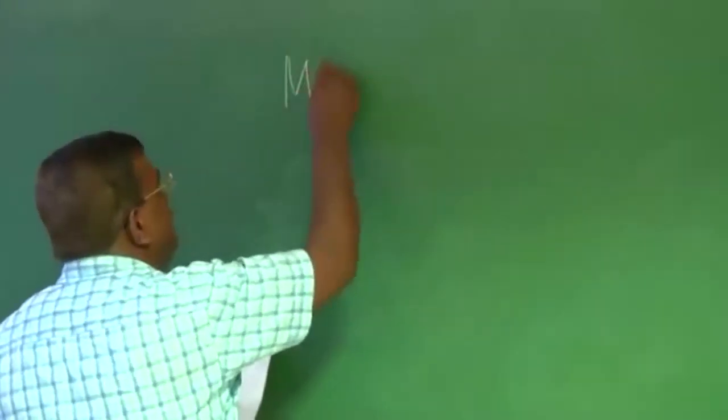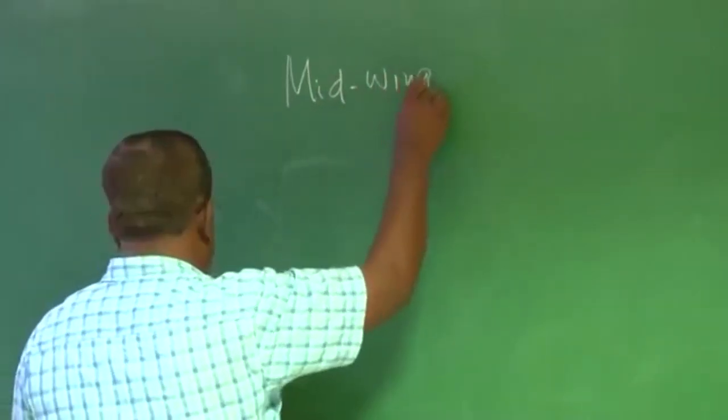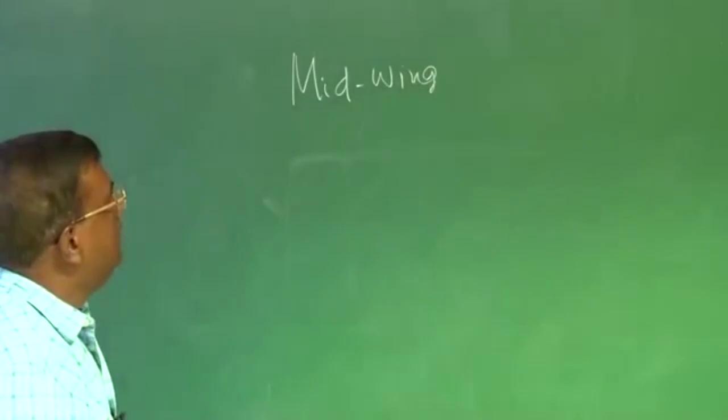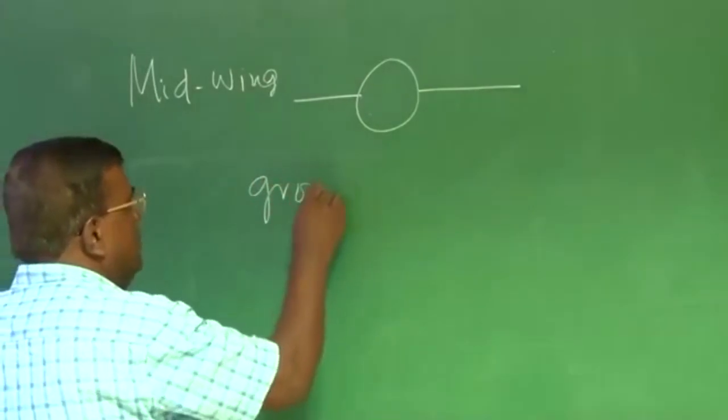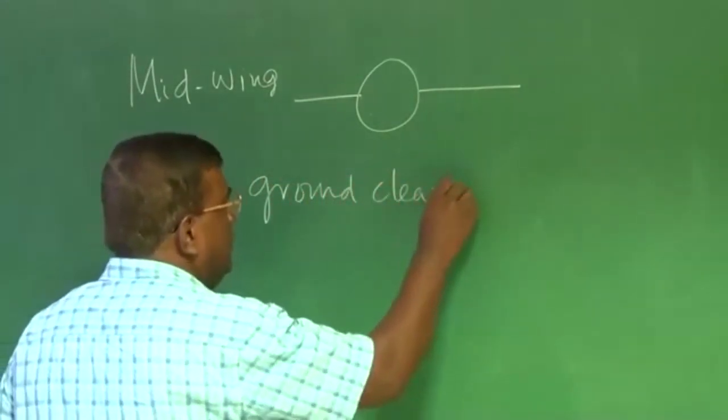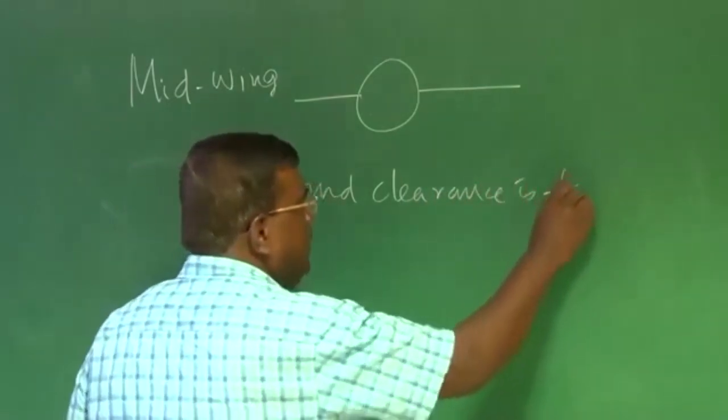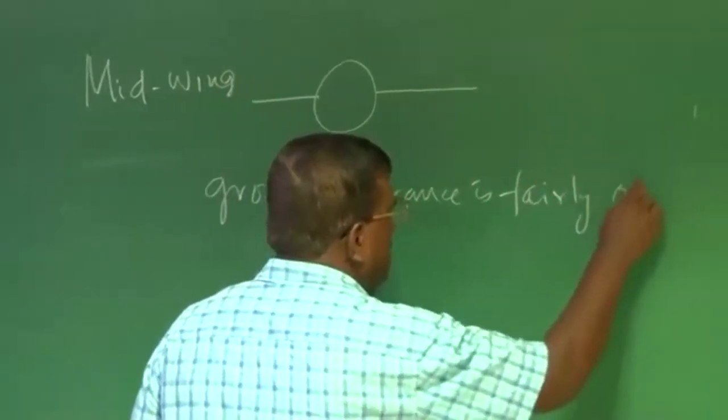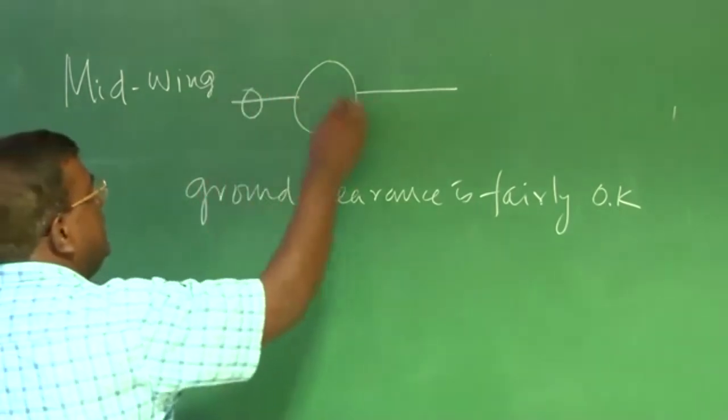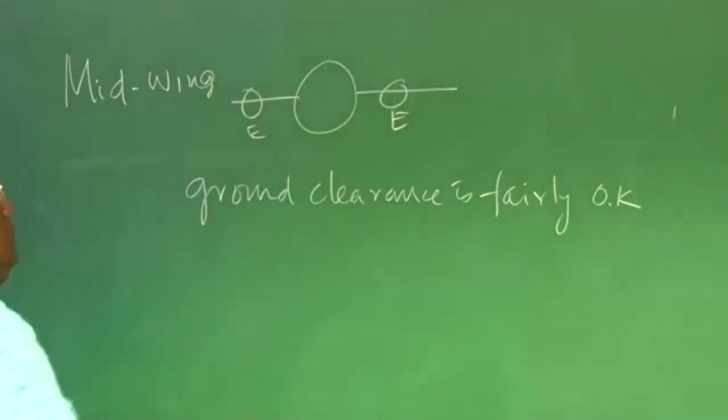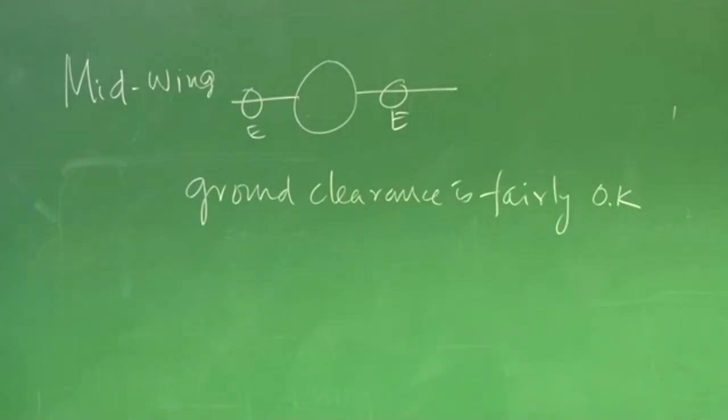Just to complete the discussion, if we think of mid wing. The mid wing here also, the ground clearance is fairly okay. Not as large as high wing, but fair enough. You know why ground clearance is also required, because you understand if the engines are here, if they are too close to the ground, then the debris from the air strip, they go inside the engine. And they may damage the engine. They may damage the propeller for a propeller driven engine. So ground clearance is okay.